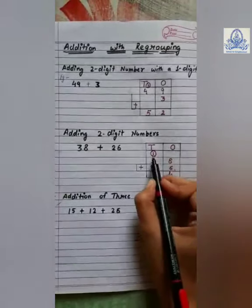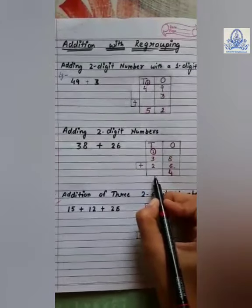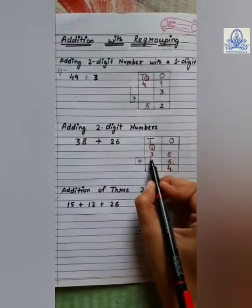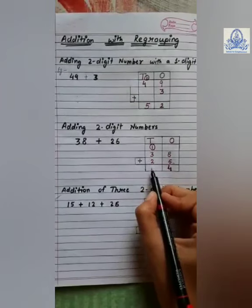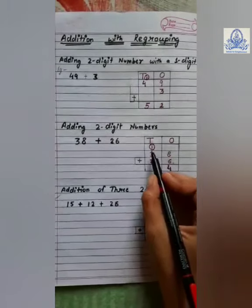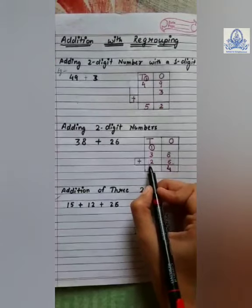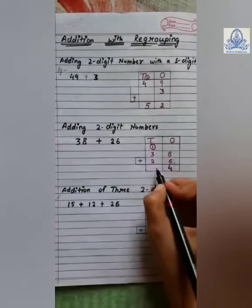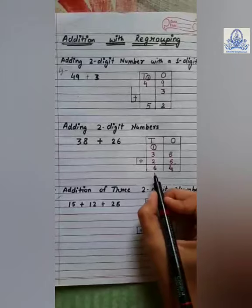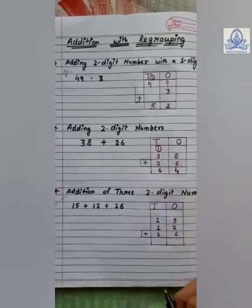Now, this one will be added in the tens digit. That is, one plus three plus two. One plus three is four, and four plus two is six. So, the answer is sixty-four.